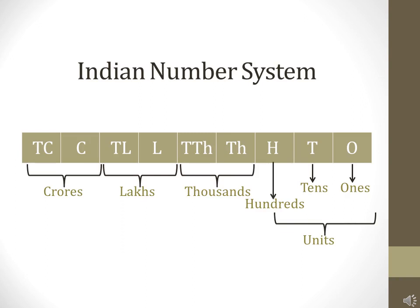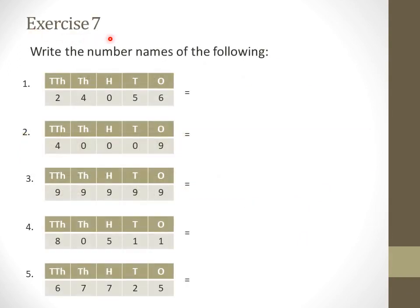Now, here you can see Exercise number 7, which is based on number names. Read the question first — it says: write the number names of the following. You have to write the number names of the following numbers. The first number is 2, 4, 0, 5, 6. For your help, I have put the place value chart with every number. When you do this exercise, you have to put the place value chart with every number to make it easy to write the number names.